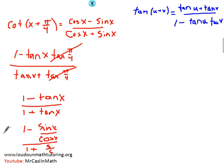Now when I see something like this in an identity, I think, hey, let's combine these into one fraction. Let's get a common denominator. So think of this as cosine of x over cosine of x